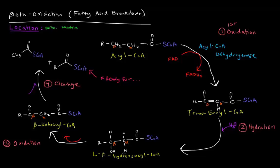Does this name make sense? It's a beta-hydroxyacyl — an acyl-CoA with a hydroxyl group on the beta carbon. Why is it called L? Well, this beta carbon is now chiral — it has four different substituents — so it has L-stereochemistry. This hydration step is catalyzed by enoyl-CoA hydratase, which makes sense: it's hydrating enoyl-CoA. So we get this L-beta-hydroxyacyl-CoA.